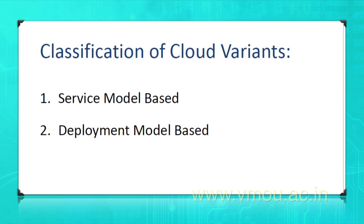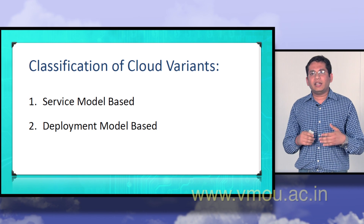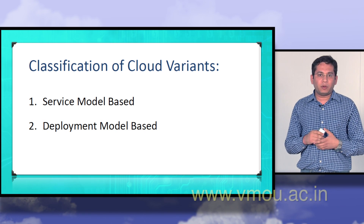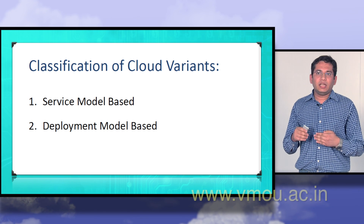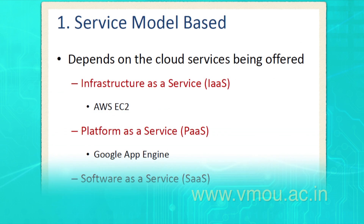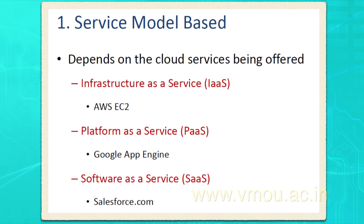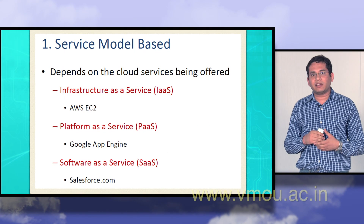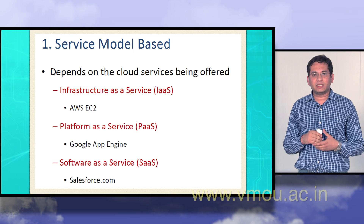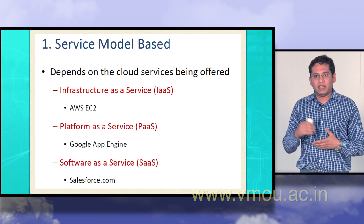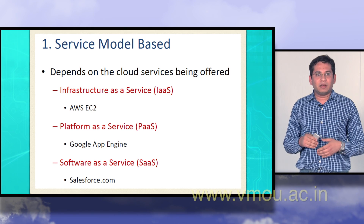Next, we will talk about the classification of cloud variants. One is service model based — what all services cloud vendors are offering you — and another is deployment model based — in what way you will be deploying your cloud. Firstly, the service model based classification depends on the cloud services being offered: IaaS, which is infrastructure as a service; PaaS, which is platform as a service; and SaaS, which is software as a service. We will be discussing these topics in the coming slides.